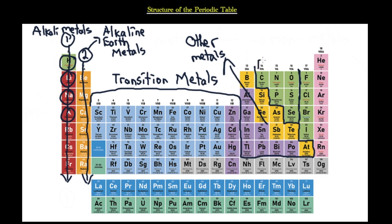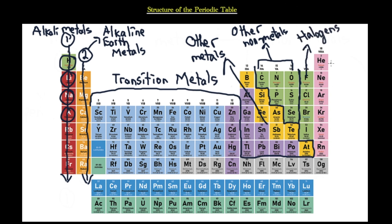The group containing fluorine, chlorine, bromine, and iodine is a very special and very reactive group called the halogens. The last category on the far right are called noble gases.